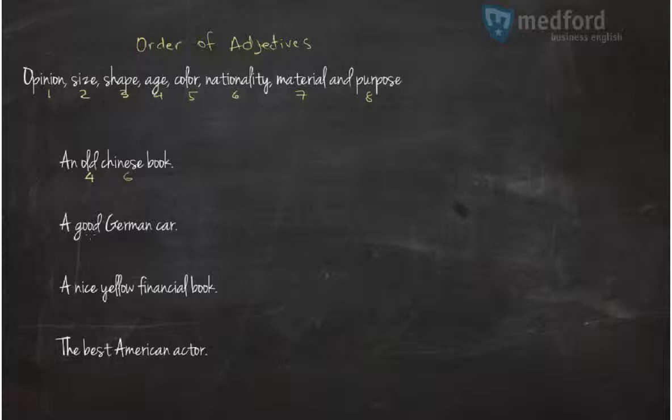A good German car. Again, good is my opinion. So that's the number 1. And German is nationality, number 6. I cannot change the order. I cannot put 6 in front of 1.